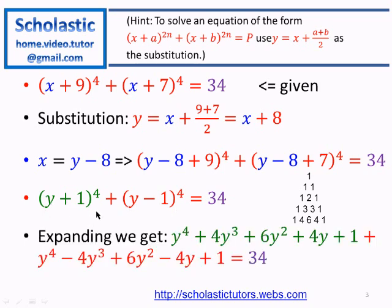Expanding the first term (y + 1)⁴: y⁴ + 4y³(1) + 6y²(1²) + 4y(1³) + 1⁴. Expanding the second term (y − 1)⁴: y⁴ + 4y³(−1) + 6y²(−1)² + 4y(−1)³ + (−1)⁴. Since (−1)² = 1, the y² term is positive; since (−1)³ = −1, the y term is negative; and (−1)⁴ = 1. The right-hand side remains 34.